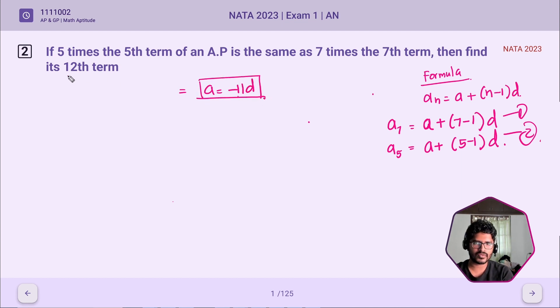Now we need to find out the value for the 12th term. So that is A12 = A + (12 - 1)D, which will be A + 11D. Now substitute the value of A here, so we will be able to find out A12.